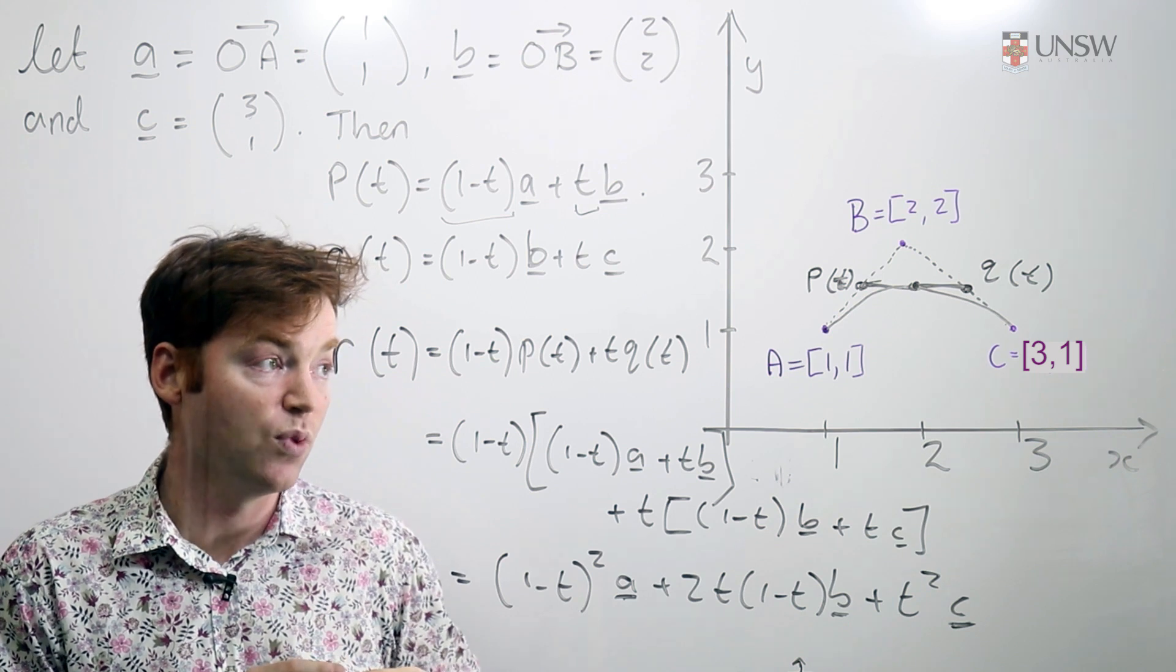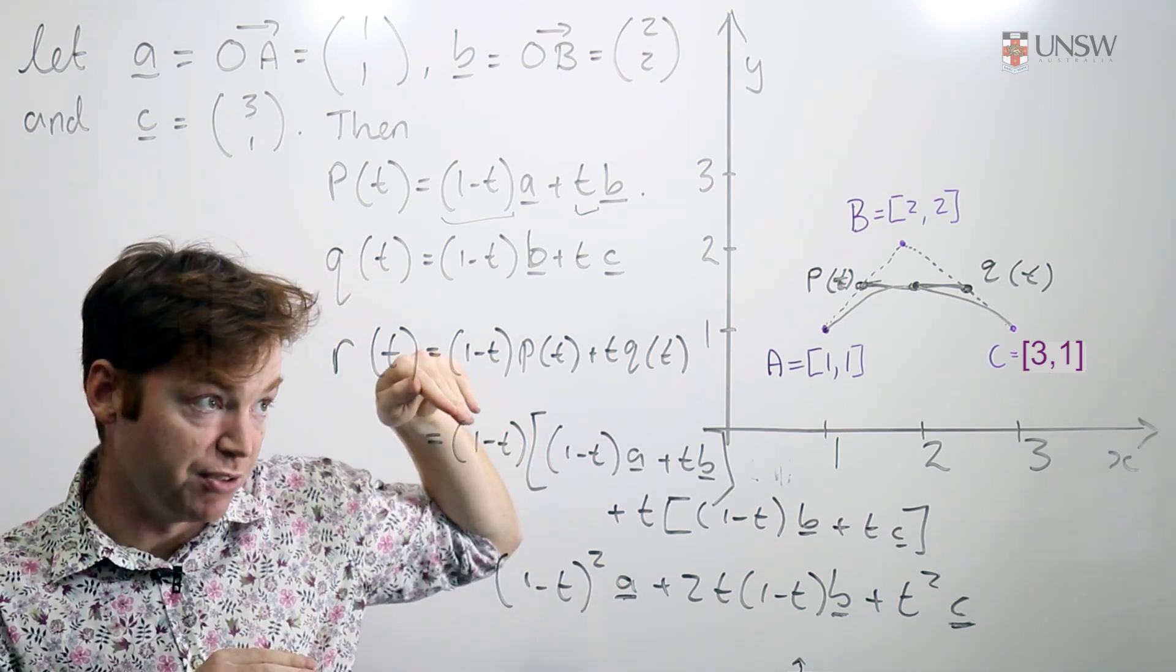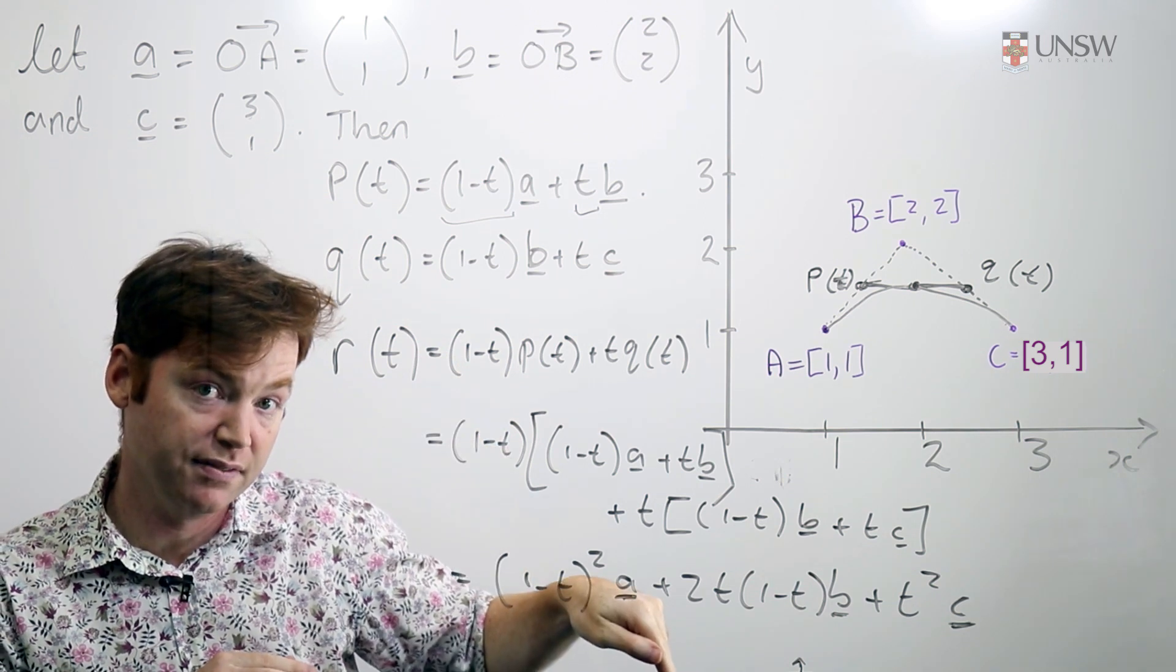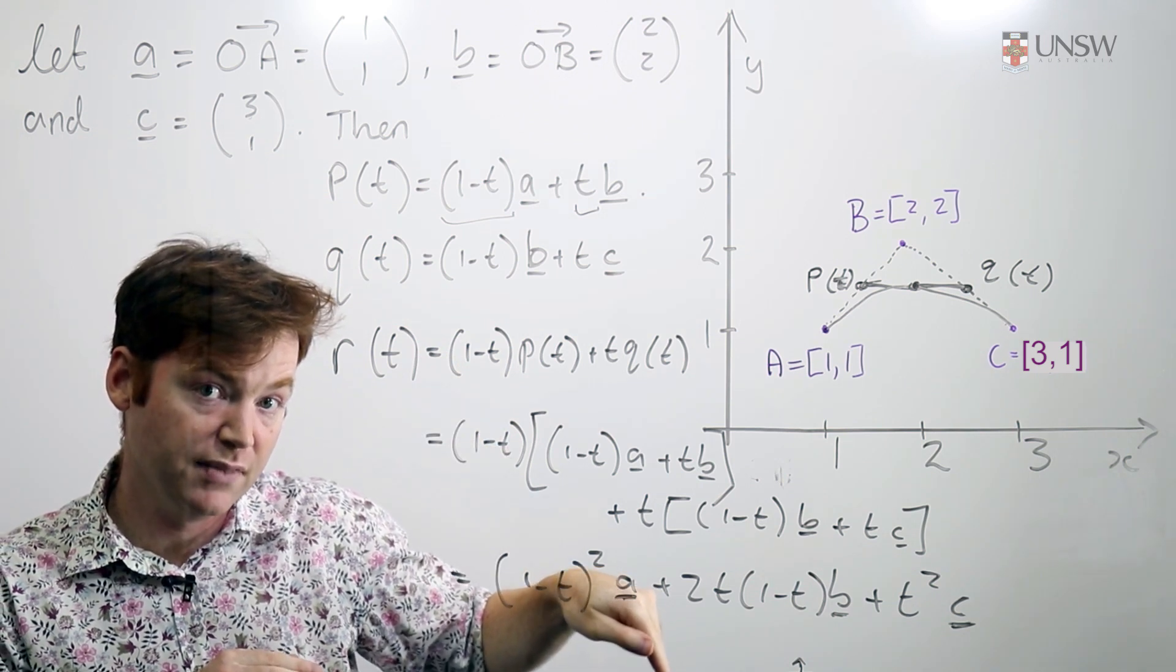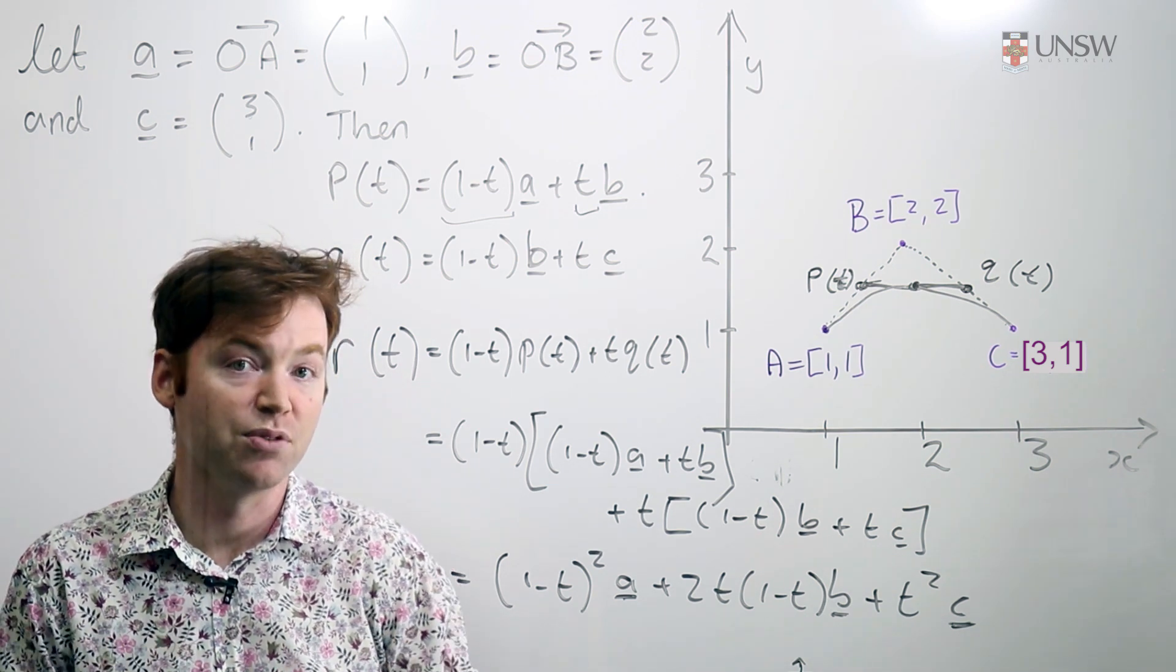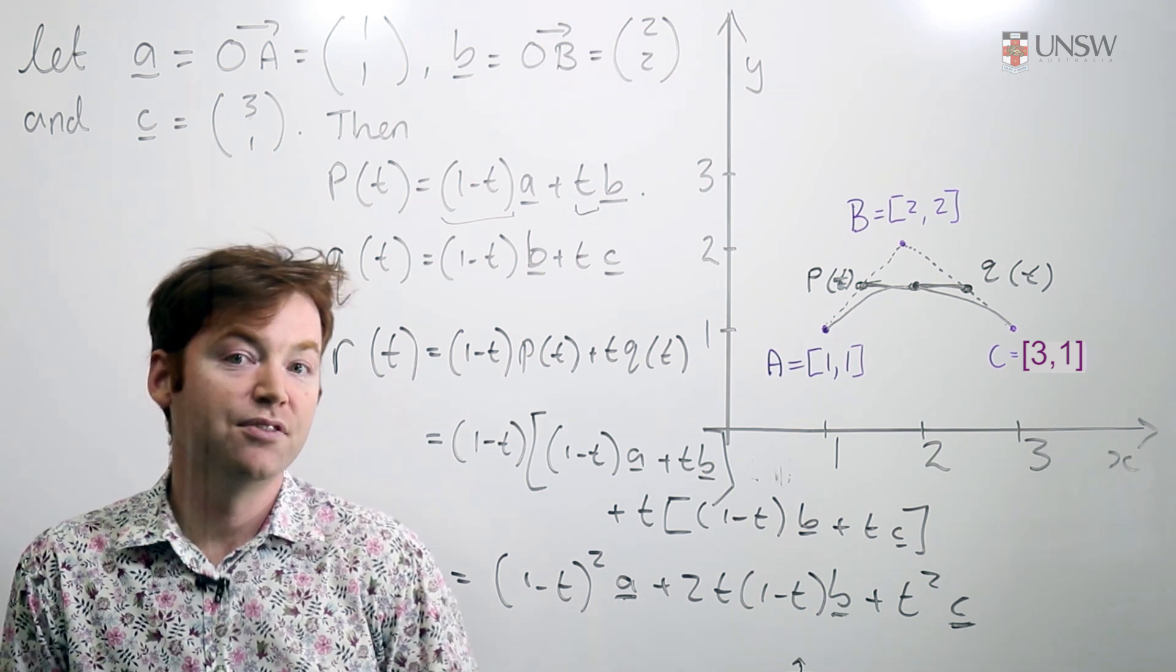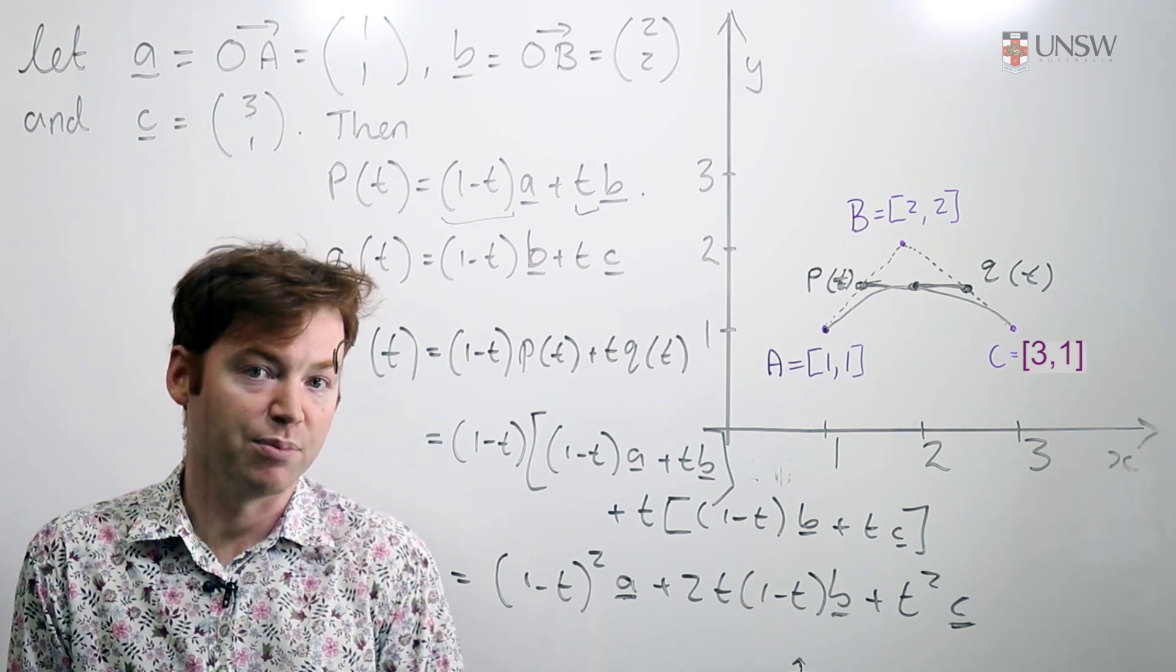Finally, when t is equal to 1, the point is at c, but its trajectory is in line b, c. So this is a very convenient way of describing curves. You can talk about the end points, you can talk about the initial and final trajectories. You can talk about the whole curve just by specifying three points.